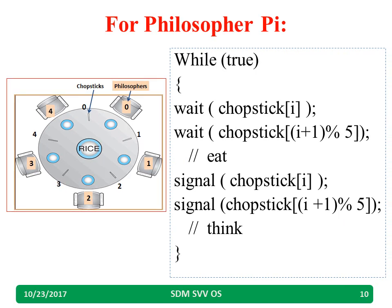In general, the structure for philosopher i is: while true — wait(chopstick[i]), wait(chopstick[(i+1) % 5]). The modulo 5 is used because after chopstick 4, the next should be chopstick 0. The modulus depends on how many philosophers are sitting. Then eat. Once eating is over, signal both chopsticks and start thinking again.